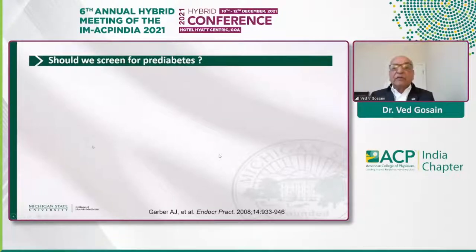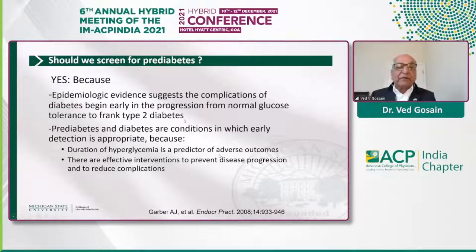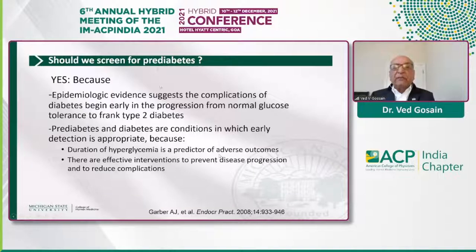Should we screen for pre-diabetes? The answer is yes, because epidemiological evidence suggests that complications begin early and progress as hyperglycemia progresses. We now have effective interventions to prevent disease progression. Therefore, pre-diabetes meets all the criteria for screening, and we should be screening for it.